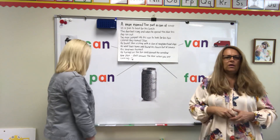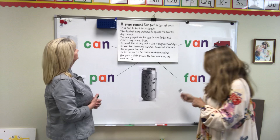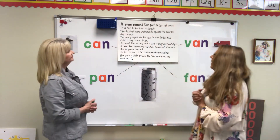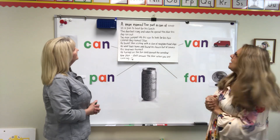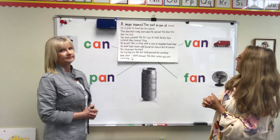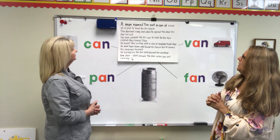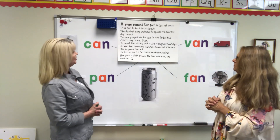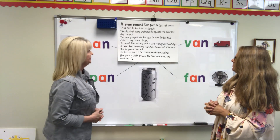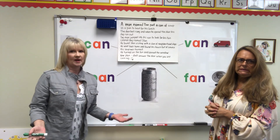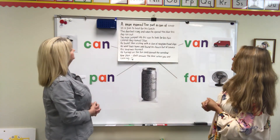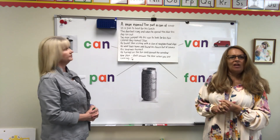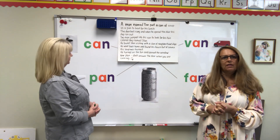Okay, so we're going to use these AN words in our story. And this is what we came up with: A man named Dan put a can of soup in a pan to heat for his lunch. The doorbell rang. When he opened the door, his dog ran out. The man jumped into his van to look for his tan-colored dog named Stan.